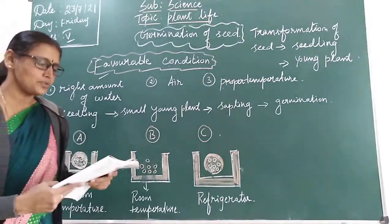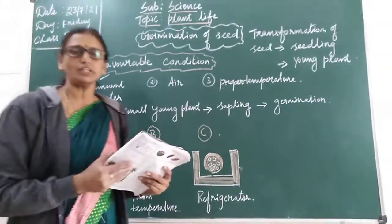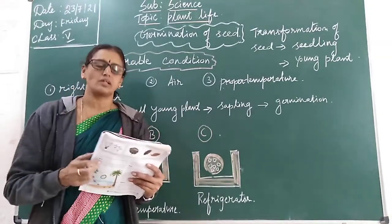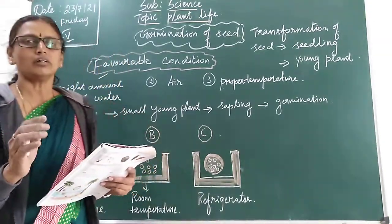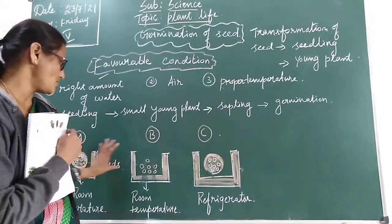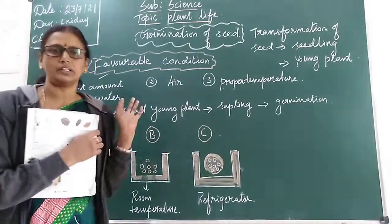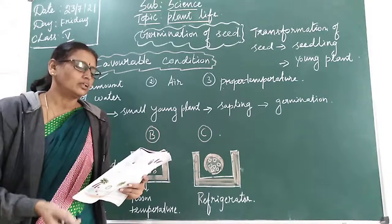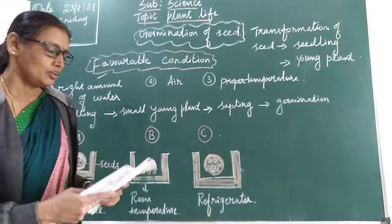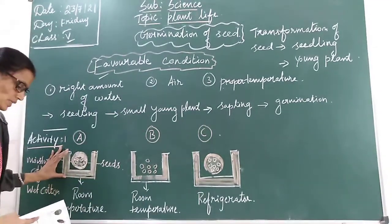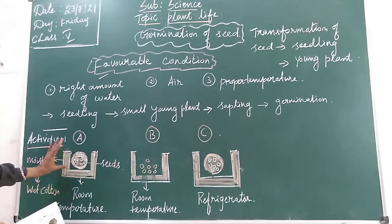You are going to observe this activity for 4 to 5 days. Observe the changes in these three containers. After 3 to 4 days, you will observe that only the seeds in container A show germination.